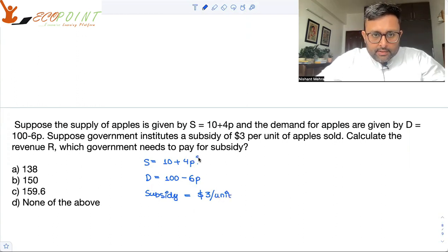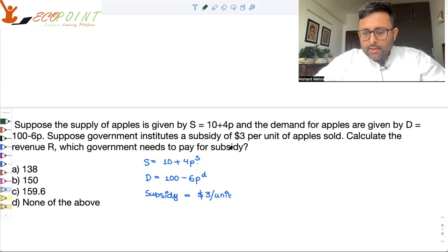So I can write the supply function as 10 plus 4p, that is supply price. 100 minus 6p is the demand price. When the subsidy is given, subsidy is like the negative of tax. So consumers have to pay little less. So it's going to be pt equals ps minus 3.